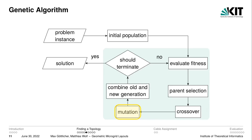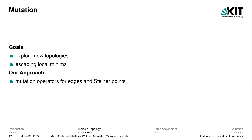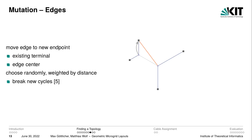After computing an individual we subject it to mutation, which also needs to be adapted to the problem structure. The goals of mutation are to explore new topologies and thus to escape local minima. Our approach uses separate operators for the edges and for the Steiner points, applied sequentially. For the edges, we choose a random edge and then choose a new endpoint close to one of the original endpoints — this can be an existing terminal or Steiner point, or an edge center where we insert a new Steiner point. These possible new endpoints are chosen randomly but weighted by distance, and we ensure that cycles are broken and the graph remains connected.